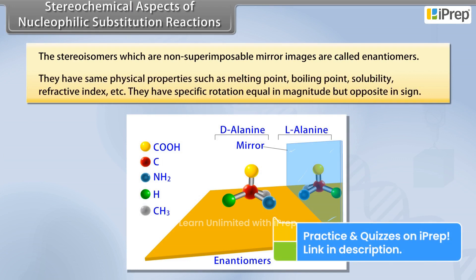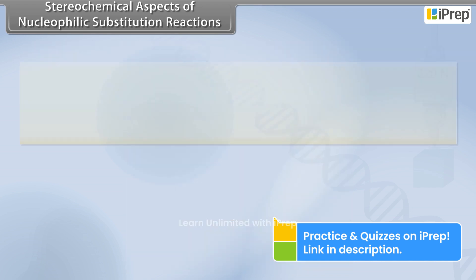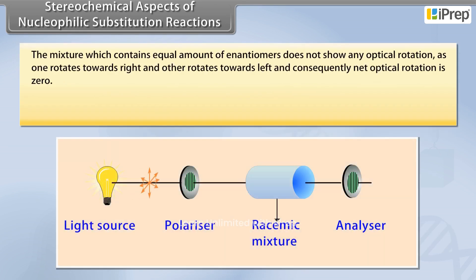Enantiomers have the same physical properties such as melting point, boiling point, solubility, and refractive index. They have specific rotation equal in magnitude but opposite in sign. The mixture which contains equal amounts of enantiomers does not show any optical rotation, as one rotates towards right and the other rotates towards left, and consequently the net optical rotation is zero.